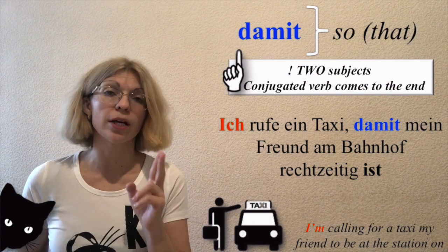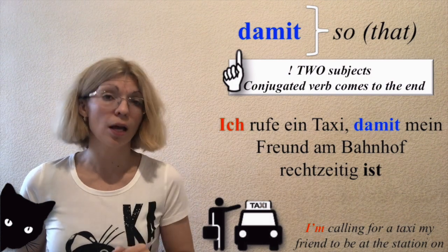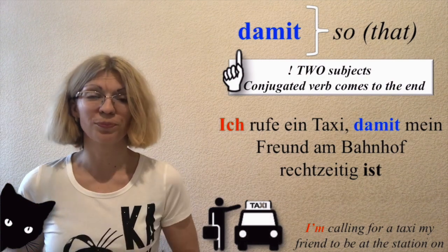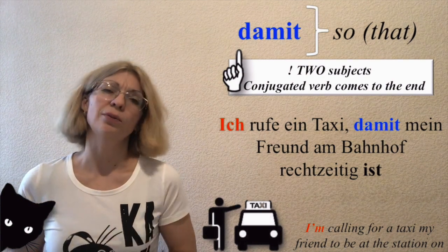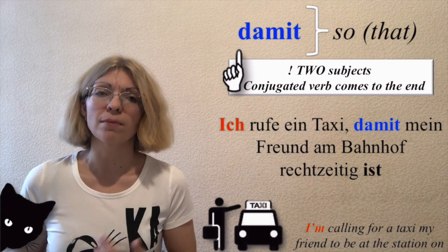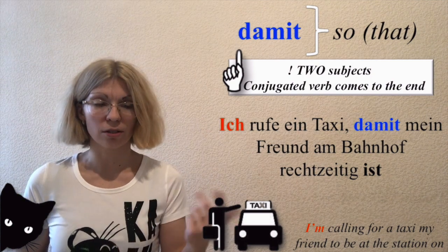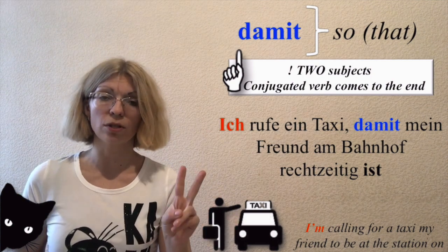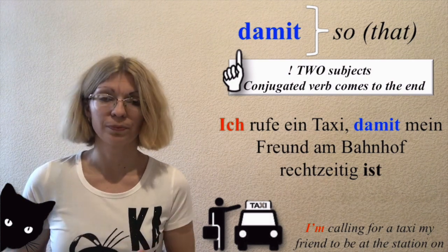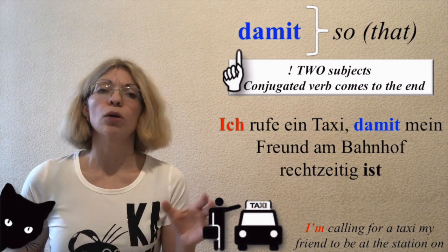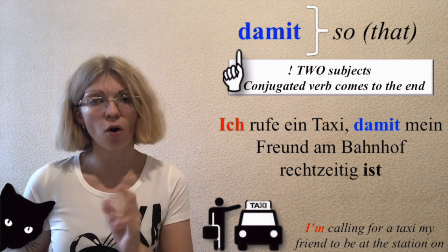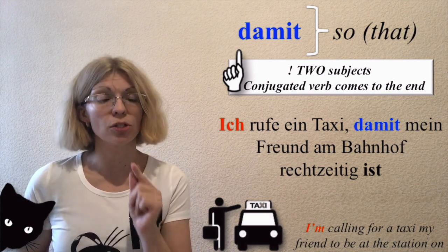Pay attention: with 'damit' there are two different subjects, and the conjugated verb comes to the end of the subordinated clause. Example: 'I'm calling for a taxi for my friend to be at the station on time.' There are two subjects: 'ich' and 'my friend', so: 'Ich rufe ein Taxi, damit mein Freund am Bahnhof rechtzeitig ist.'